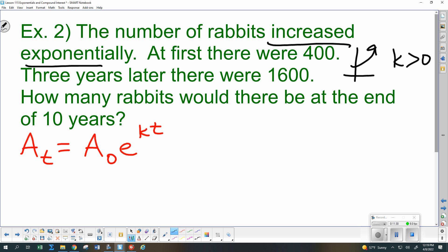At first, there were 400. Yesenia, where should I put the 400 in this problem? It's the starting amount. So we put that at a zero, the amount at time zero. And three years later, so that means the time is three. And the amount then, so that means a three is 1600. So I put a three would be 1600, 400, e to the k times three, or 3k.